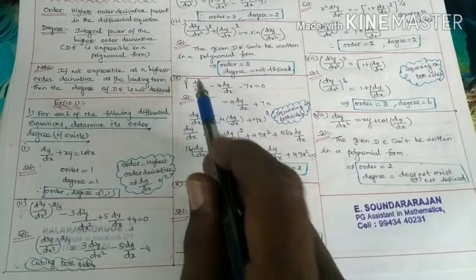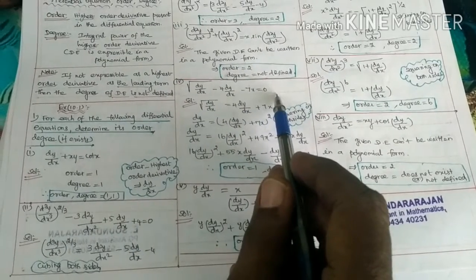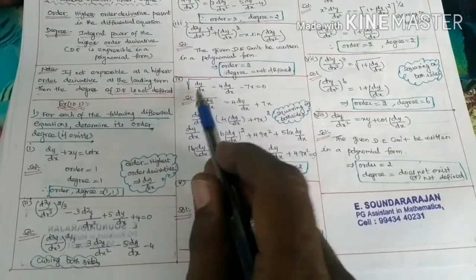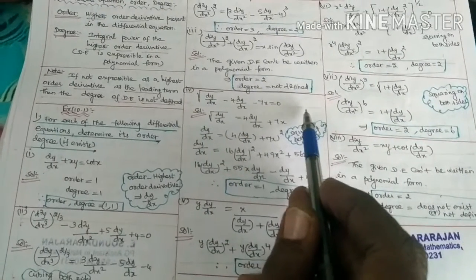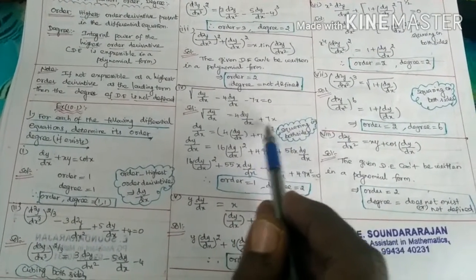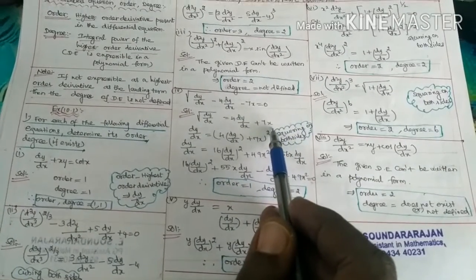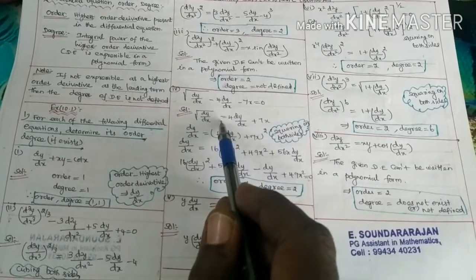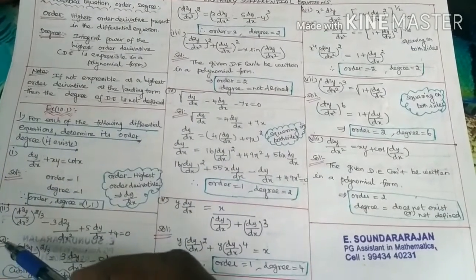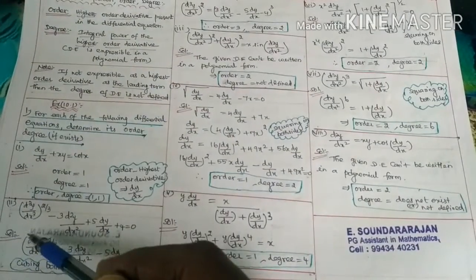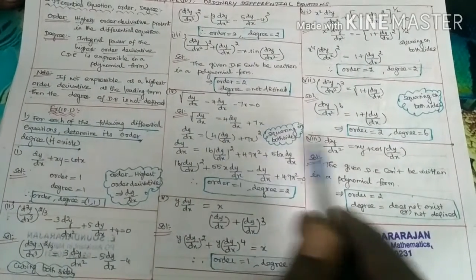Fourth question: √(dy/dx) - 4·(dy/dx) - 7x = 0. There is a square root of dy/dx. Rearranging, move 4·(dy/dx) + 7x to the right-hand side: √(dy/dx) = 4·(dy/dx) + 7x. Then square both sides to remove the square root.